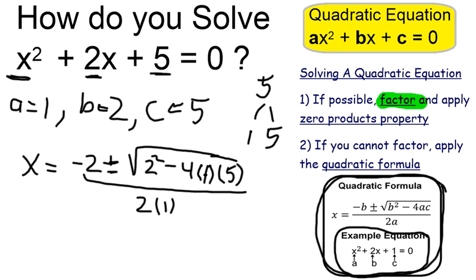Let me start inside the radical. The radical has a plus or minus in front of it. That's going to be 2 squared is 4. Then I get 4 times 1 times 5. It's a minus 20.